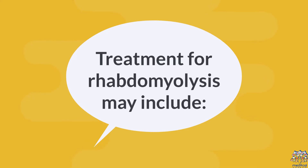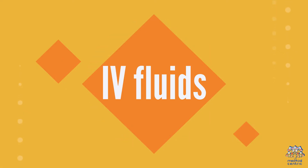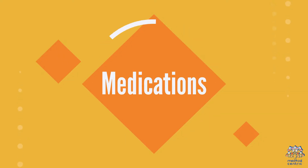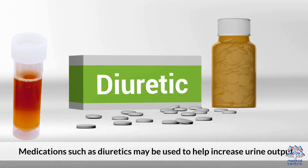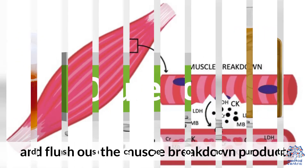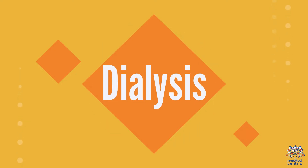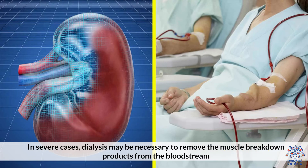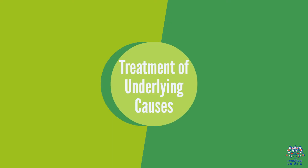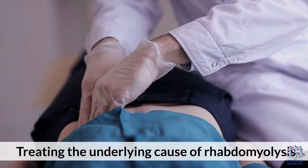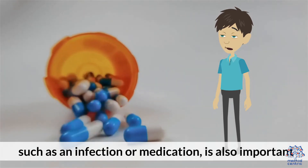Treatment for rhabdomyolysis may include: IV fluids, which can help flush the muscle breakdown products out of the kidneys and prevent kidney damage; medications such as diuretics to increase urine output; dialysis in severe cases to remove muscle breakdown products from the bloodstream; and treatment of the underlying cause, such as an infection or medication.